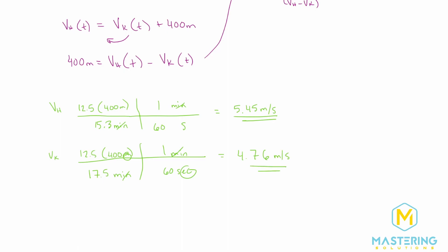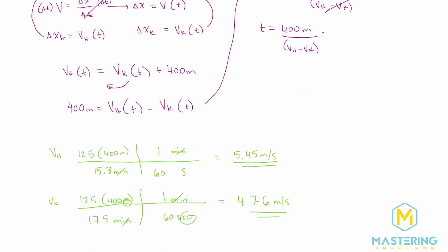So now we have both of their speeds and we can bring them back up here into the equation to figure out what the time was when Hannah lapped Kara. So the time will be equal to 400 meters divided by 5.45 minus 4.76 meters per second.